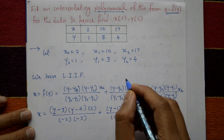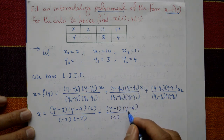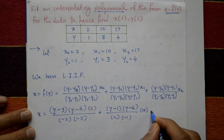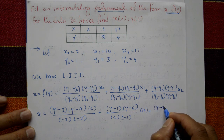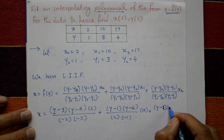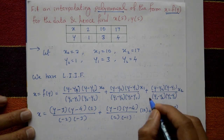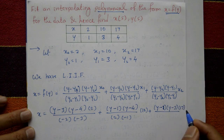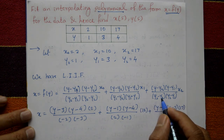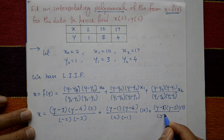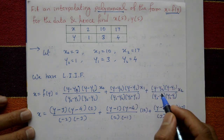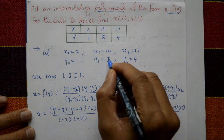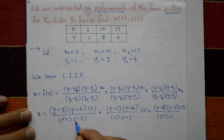Substituting values: y₁ − y₂ = 3 − 4 = −1, so the first term gives (y − 3)(y − 4) · 2 divided by (1 − 3)(1 − 4). The second term: (y − 1)(y − 3) · 10 divided by (y₁ − y₀)(y₁ − y₂). The third term: x₂ = 17 divided by (y₂ − y₀) = 3 and (y₂ − y₁) = 1. Minus into minus gives plus.